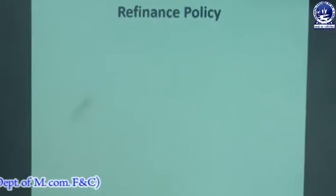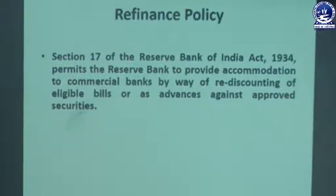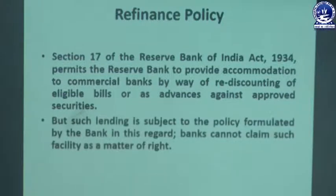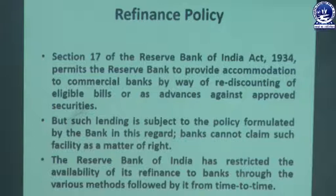Another important quantitative technique is refinance policy. Under Section 17 of the Reserve Bank of India Act 1934, the Reserve Bank is permitted to provide accommodation to commercial banks by way of rediscounting of eligible bills or as advances against approved securities. However, such lending is subject to the policy formulated by the bank. Banks cannot claim such facility as a matter of right, and the Reserve Bank of India has restricted the availability of its refinance to banks through various methods followed from time to time.